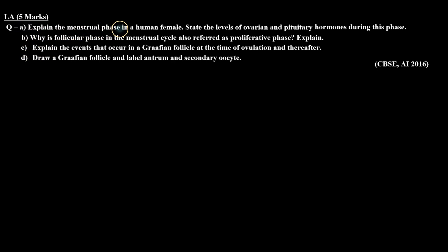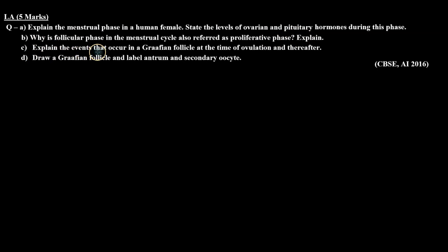So the question is: A part — explain the menstrual phase in a human female and state the levels of ovarian and pituitary hormones during this phase. B part — why is the follicular phase in the menstrual cycle also referred to as the proliferative phase? C part — explain the events that occur in a Graafian follicle at the time of ovulation and thereafter. D part — draw a Graafian follicle and label the antrum and secondary oocyte.